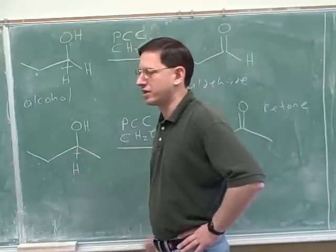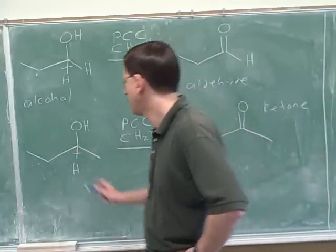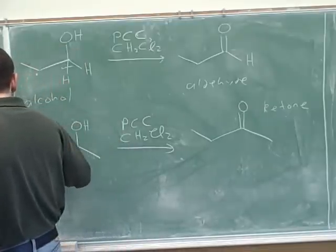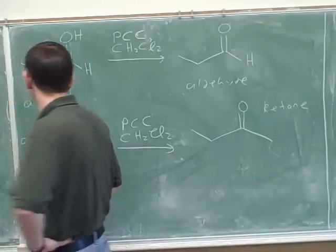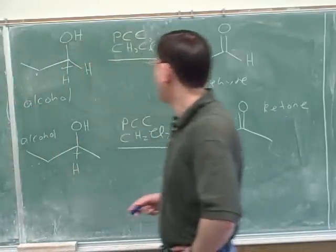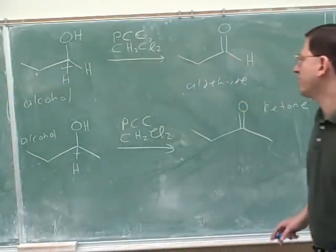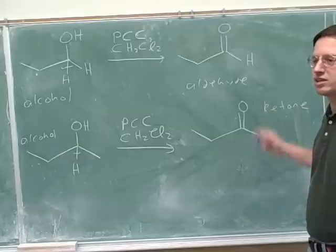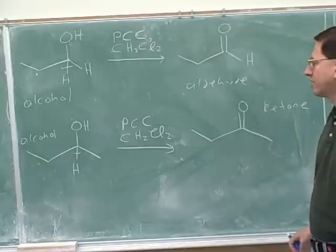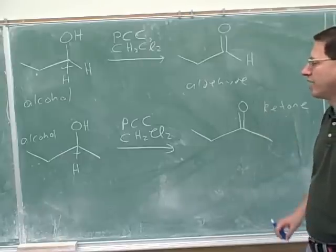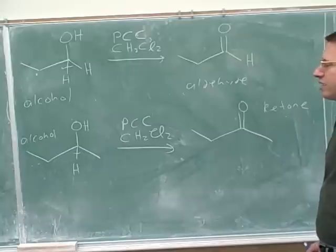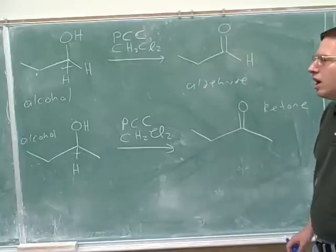What type of functional group did you start with here? Alcohol. Notice that if you start with an alcohol and oxidize it, you might produce either an aldehyde or a ketone.